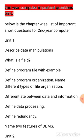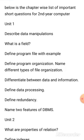Dear students, let's look at the chapter-wise most important short questions. From Chapter 1, you will have to prepare: describe data manipulations, what is a field, define program file with example, define program organization, name different types of file organization, differentiate between data and information, define data processing, define redundancy, and name two features of DBMS. These questions are selected from the full book and are chapter-wise.